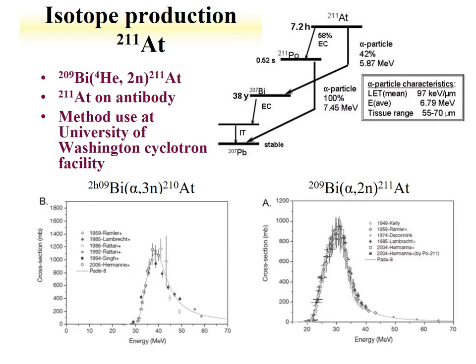A specific example for the production of medical isotopes is astatine-211. This reaction uses a bismuth-209 target and a helium projectile in a 2N reaction to make the target radionuclide. This astatine-211 is then introduced to a monoclonal antibody, covalently bonded to it using the chemistry of astatine.